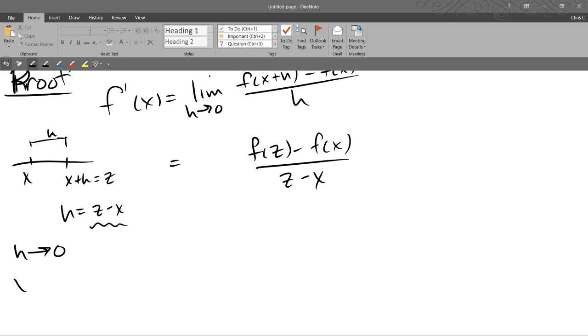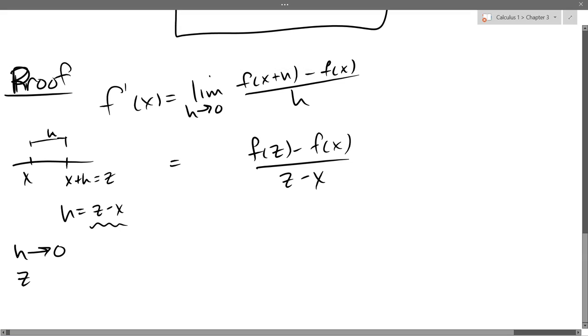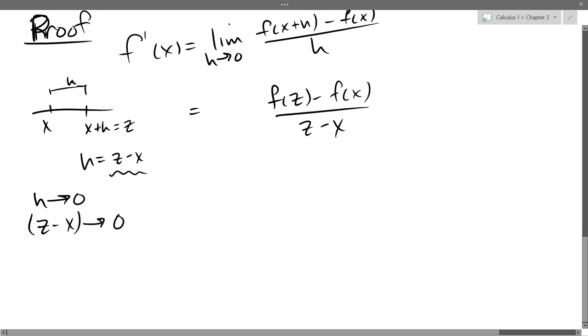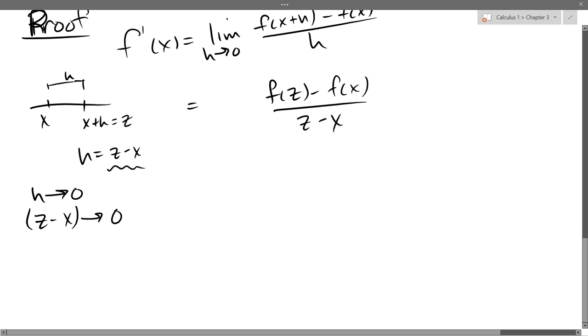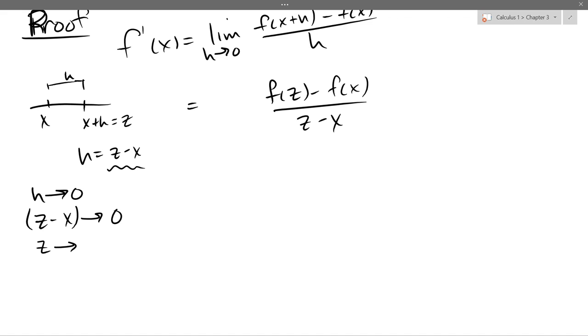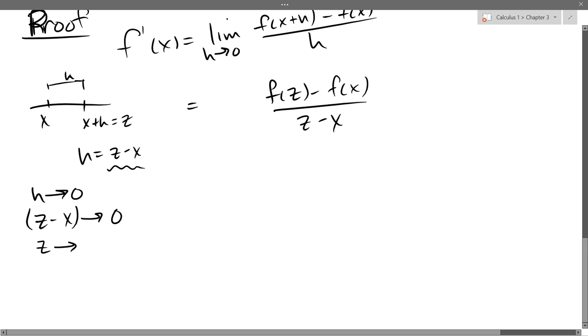z minus x. Now if x isn't changing, what does that mean is happening to z? Z is approaching what number? Zero. Not necessarily. So you subtract two numbers and you get a small quantity that's getting smaller and smaller. Would it be approaching x? Yeah, so the numbers are getting close together.